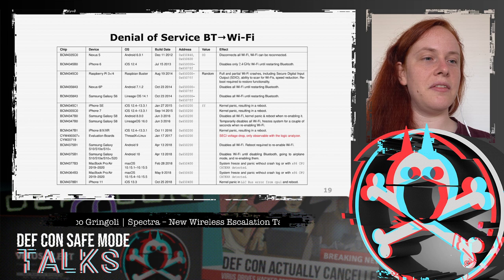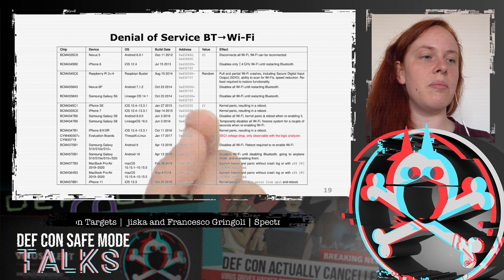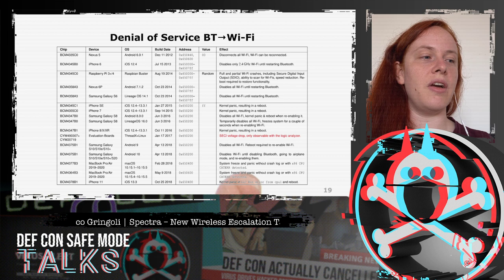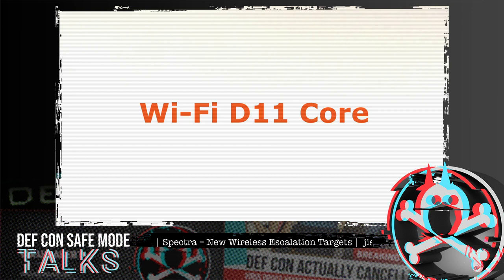Testing on devices from the Nexus 5 up to the newest MacBooks, iPhones, and Samsung Galaxy S10 and S20 showed that on the newest chips, writing 0xFF into one address is sufficient to cause a kernel panic on many devices. On some it just restarts Wi-Fi. Because this primitive is so powerful, more sophisticated attacks were built on top of it.